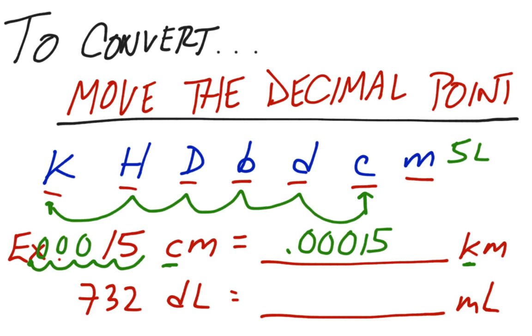We can take the same principle to address the second example. Seven hundred and thirty-two deciliters right here, to milliliters right here. In this case, we are moving two spots to the right. So we take the decimal point after the two, and we move it two spots to the right. We're left with 73,200. This should be something you're fairly familiar with, so it's more of a review going through this.